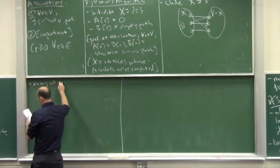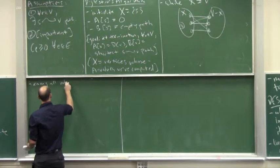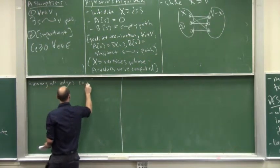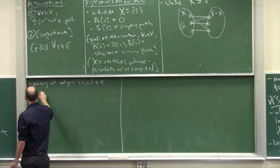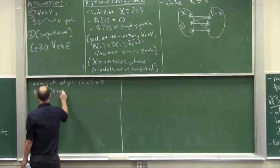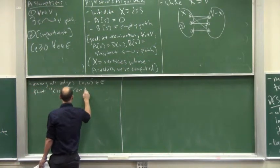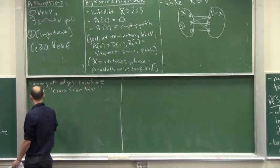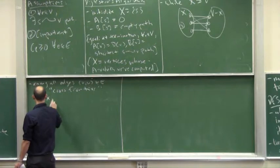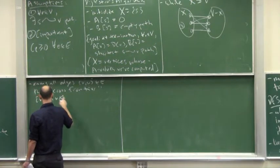So, among all edges that cross the frontier, by which I mean the tail of the edge should be in capital X but the head of the edge is not, so they go forward.